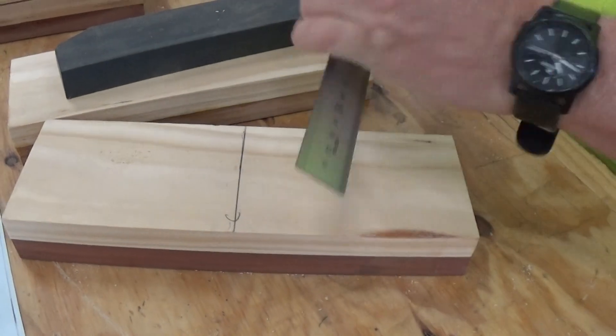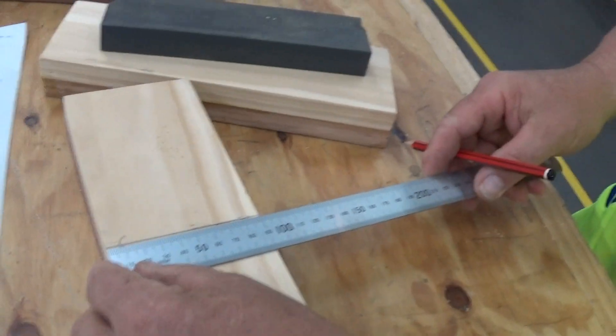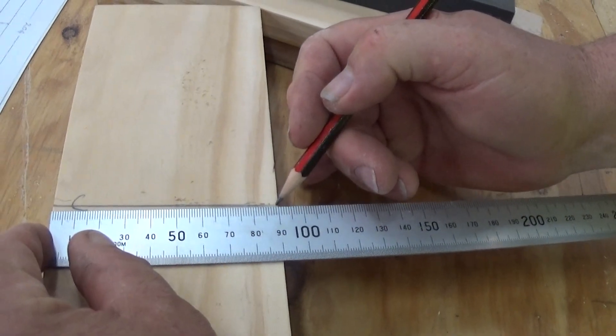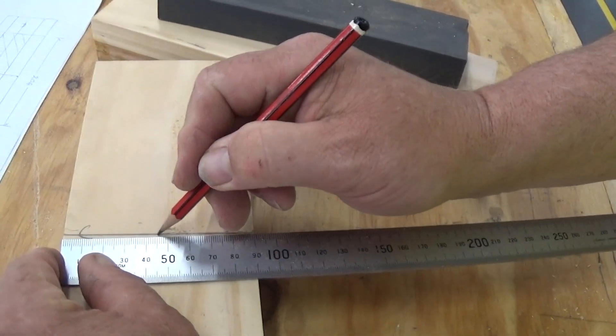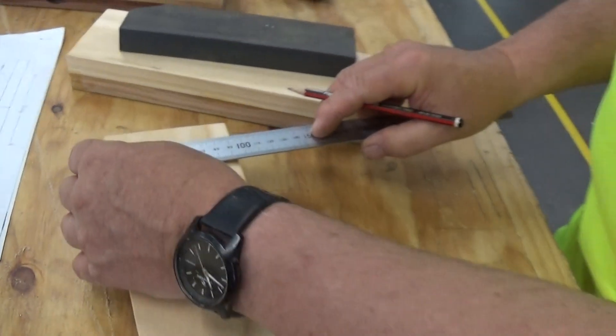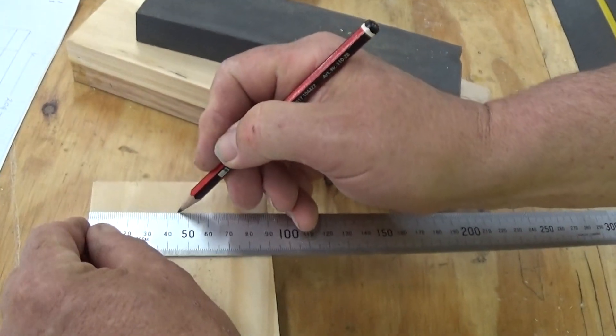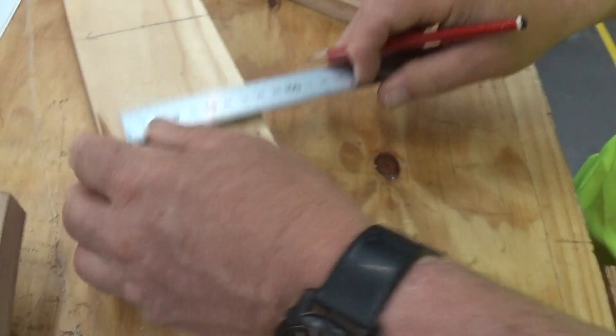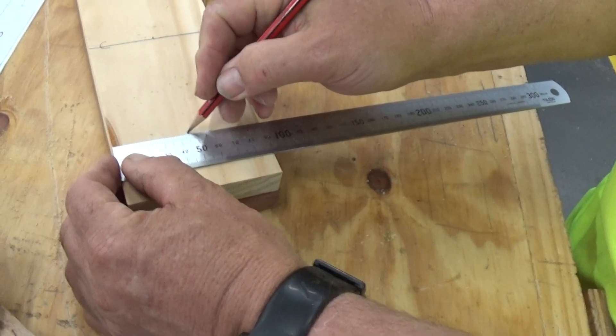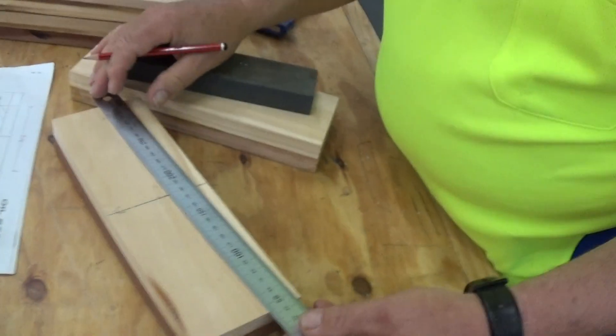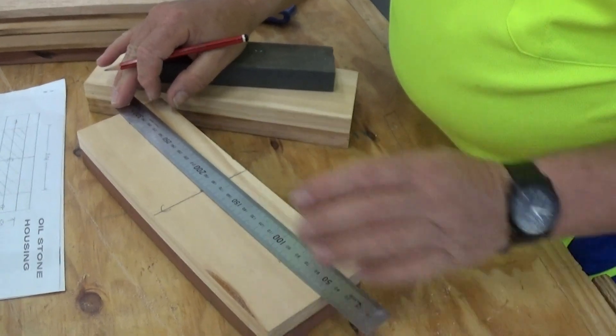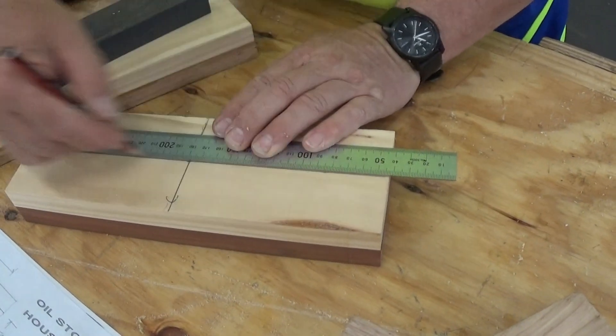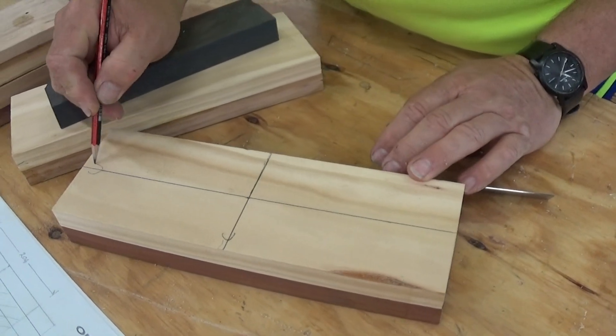Now we want to find the centre this way. It's 90 millimetres, so what's half of 90? 45. And to make sure it's centre all the way, I'm going to put 45 up here and 45 down here. Then we can just do a dot for dot. And that's the centre again.